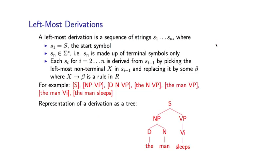That's a formal definition of context-free grammars and an example of a particular context-free grammar. The next crucial concept is the idea of a derivation, or more specifically, what's called a leftmost derivation. A derivation is a sequence of strings S1 through Sn, where S1 has to be equal to S, this distinguished start symbol in the grammar.